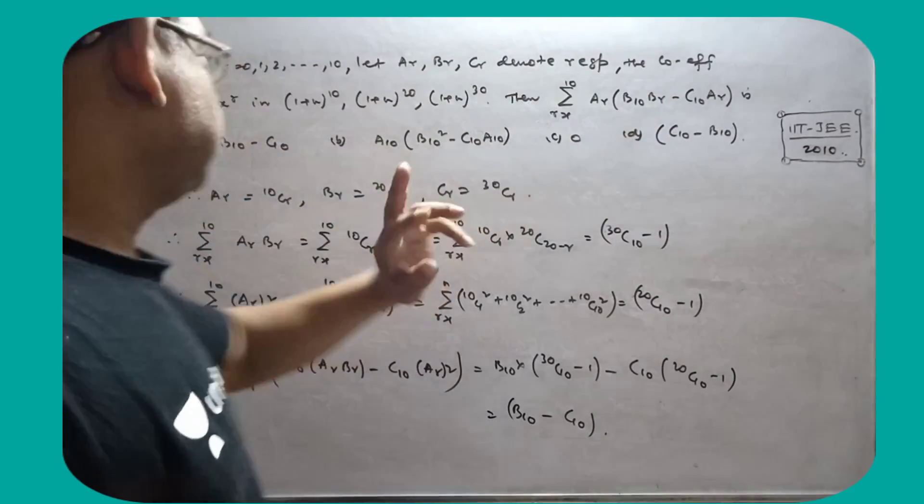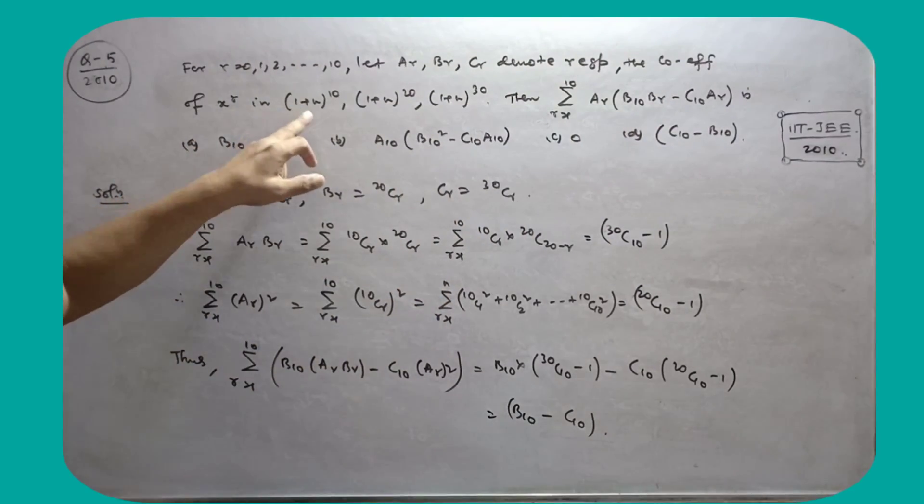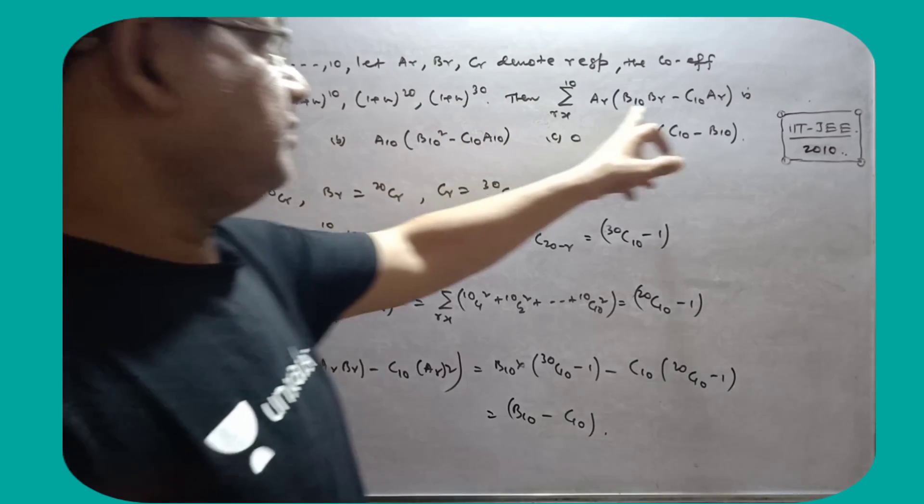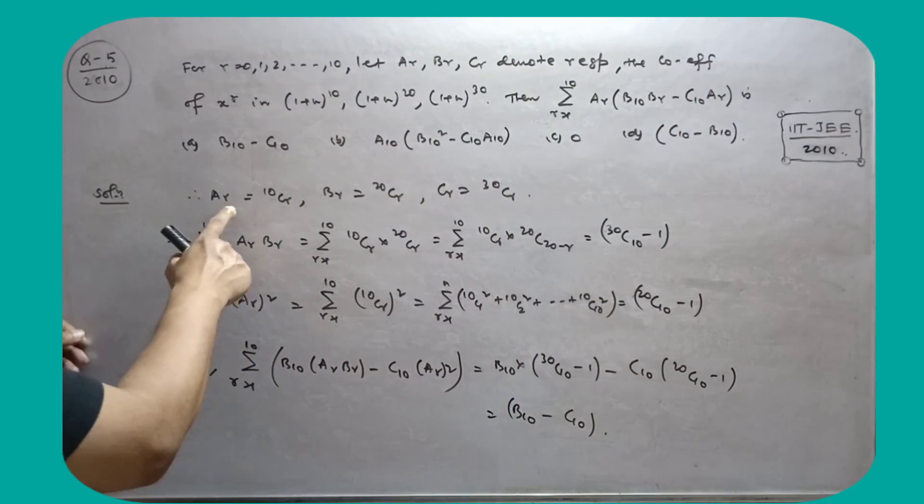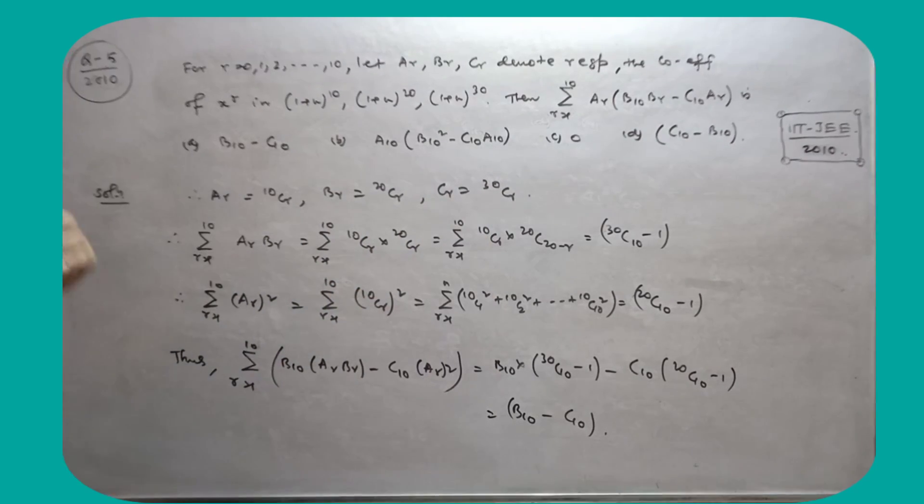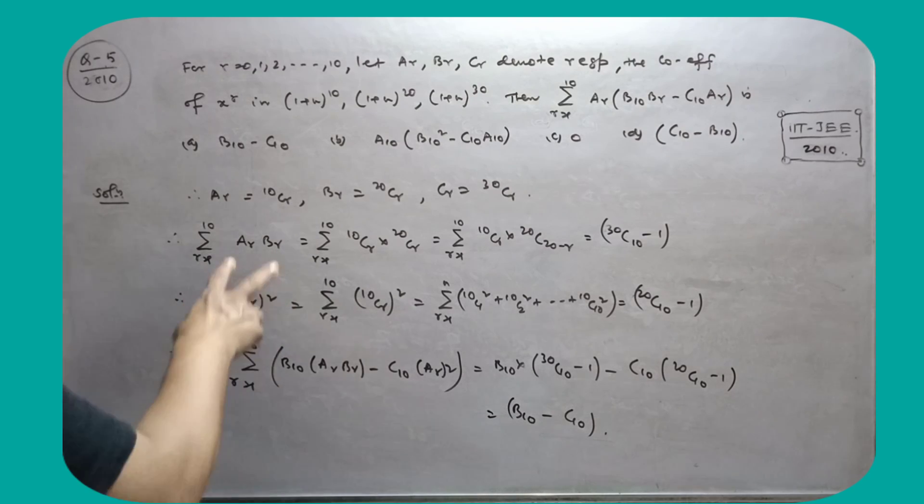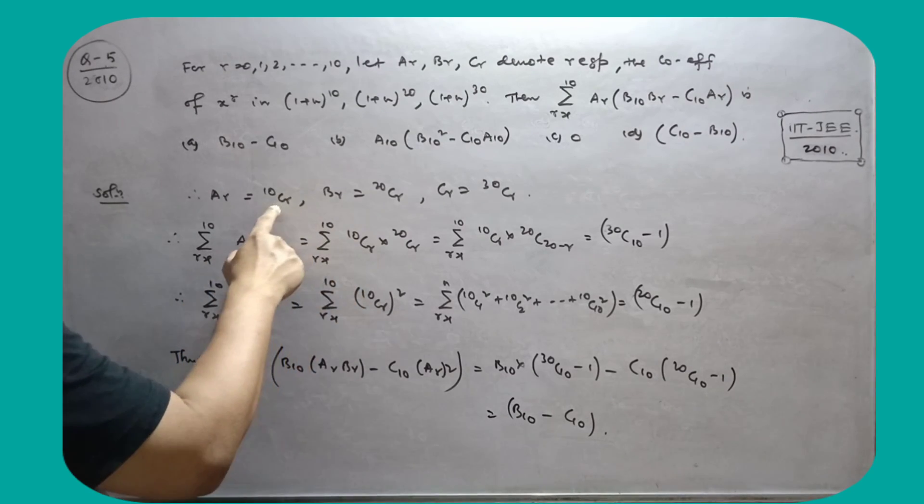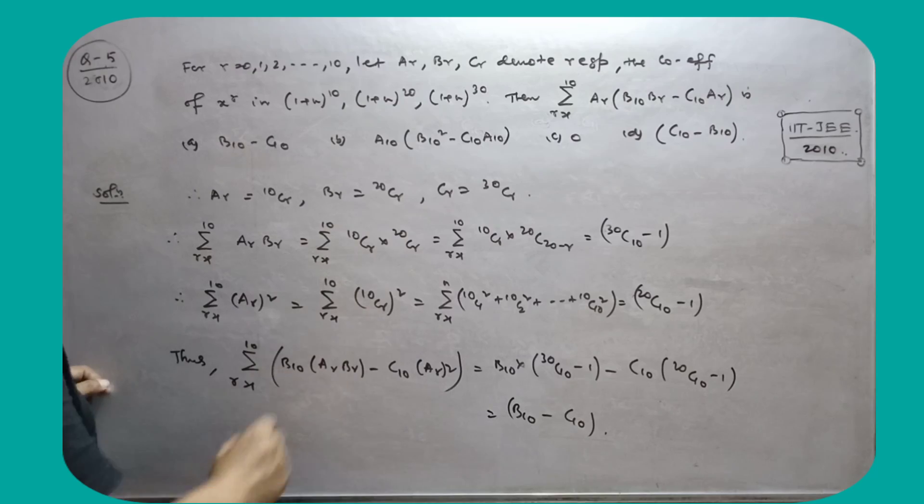Let ar, br, cr denote respectively the coefficients of x to the power r in this, then this. So ar is nCr, br is 20Cr, cr is 30Cr. So summation r equals 1 to 10, ar times br.